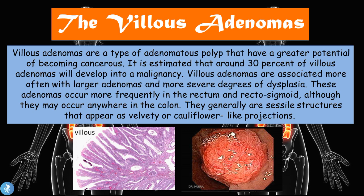Villus adenomas are generally sessile structures that appear as velvety cauliflower-like projections. These villus adenomas are a lot more aggressive, and on cross-sectional microscopy you can see the villus projections — which is why they are called villus adenomas.